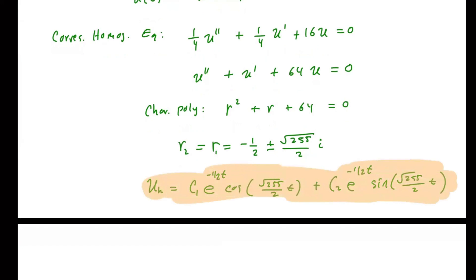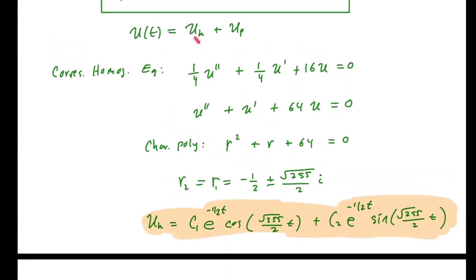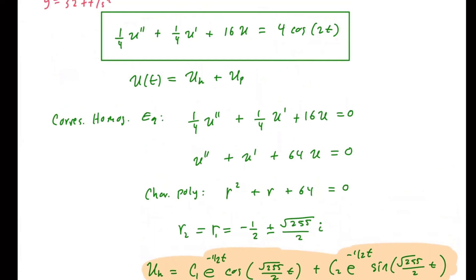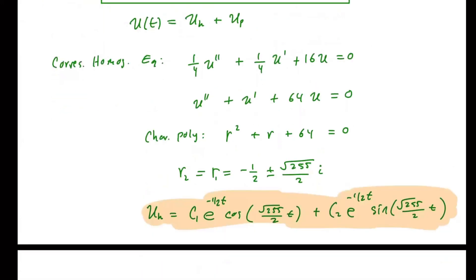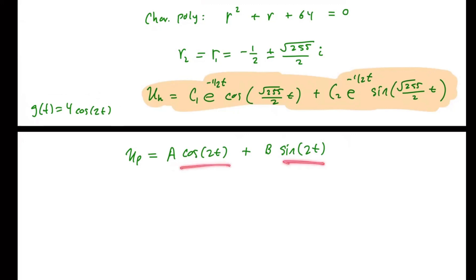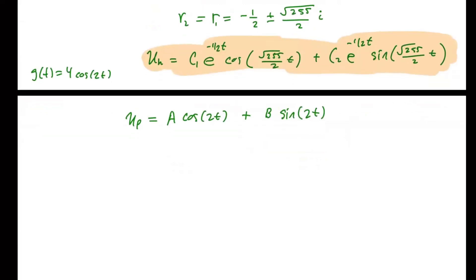Now we're going to use the method of undetermined coefficients to find the particular solution, and then the general solution is the sum of the particular and homogeneous. Going back to the original differential equation, since g of t is four cosine 2t, undetermined coefficients is the right method. We guess that u sub p equals A cosine of 2t plus B sine of 2t. Remember, if g of t is sine or cosine, you need both terms. None of these are duplicates, so no modification is needed.